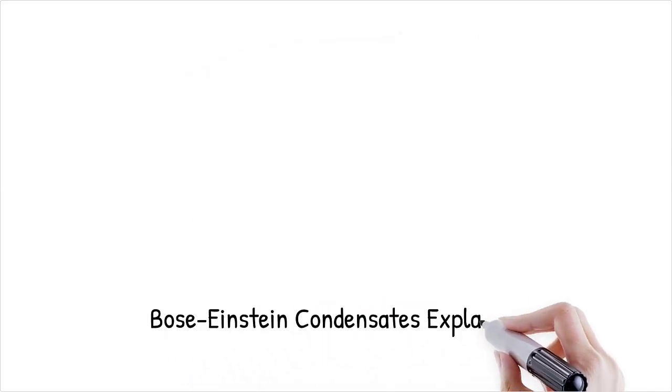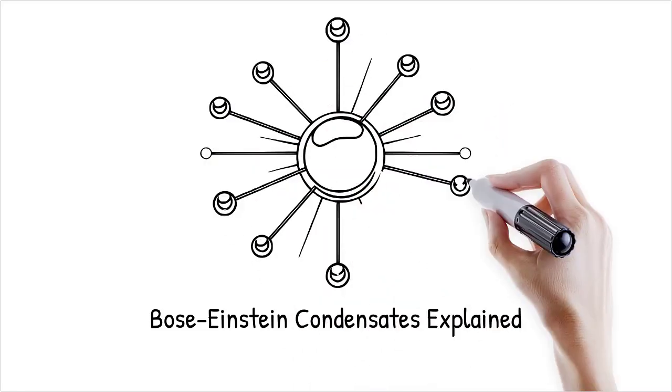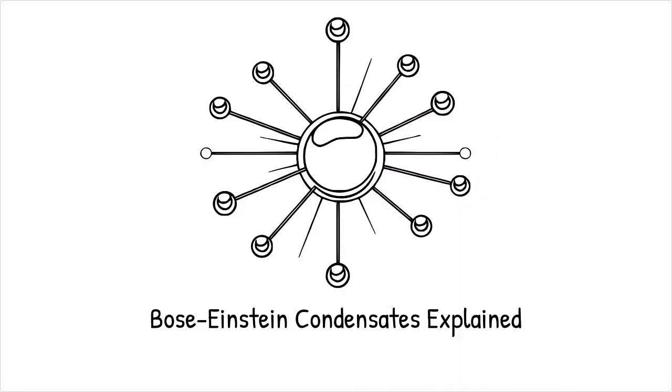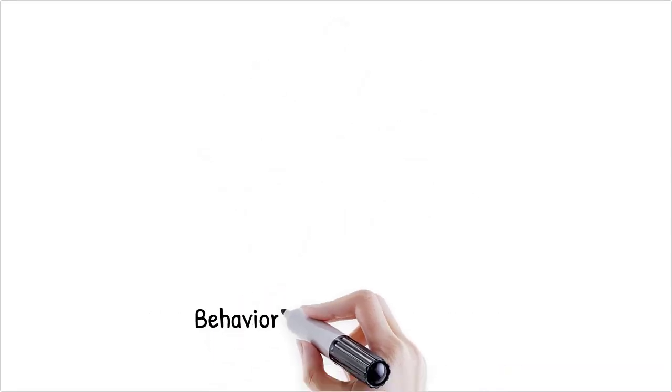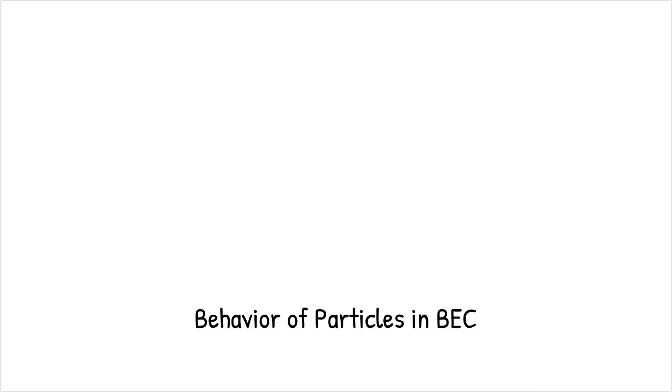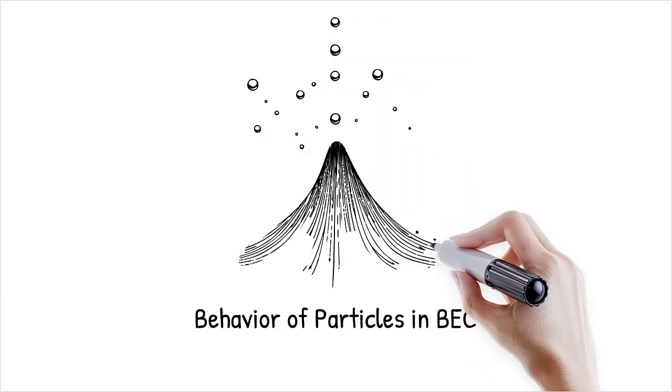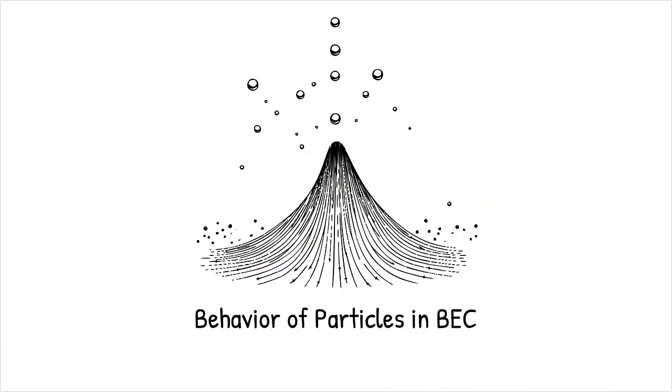A Bose-Einstein condensate, BEC, is a phase of matter that forms when bosons, particles with integer spin, are cooled to temperatures near absolute zero. In this state, the particles occupy the same quantum state, behaving as a single superparticle with wave-like properties. This extreme state of matter is characterized by coherence and quantum phenomena on a macroscopic scale.